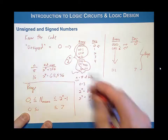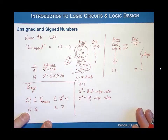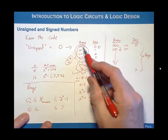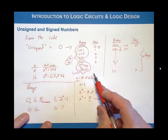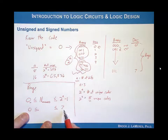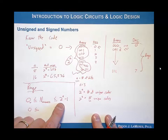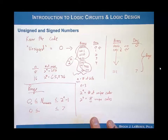Two to the n becomes one of the more powerful equations in digital logic because we're always trying to calculate, number one, how many unique codes can we have for a set of bits, and two, what is the range. For unsigned numbers, the range is zero up to two to the n minus one.